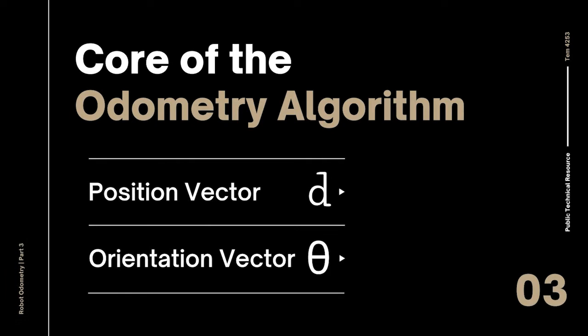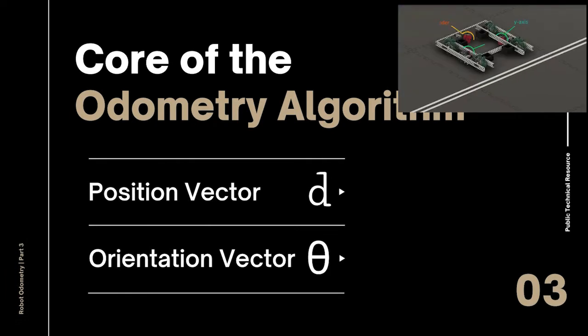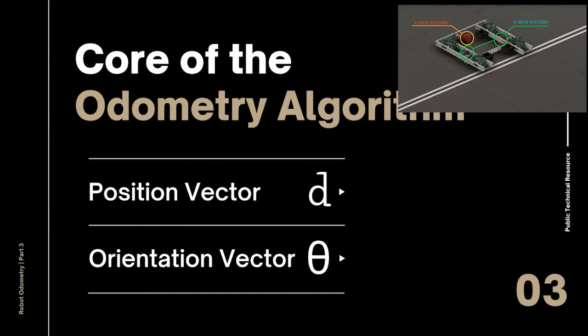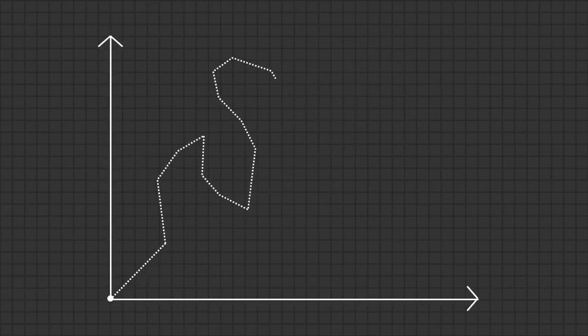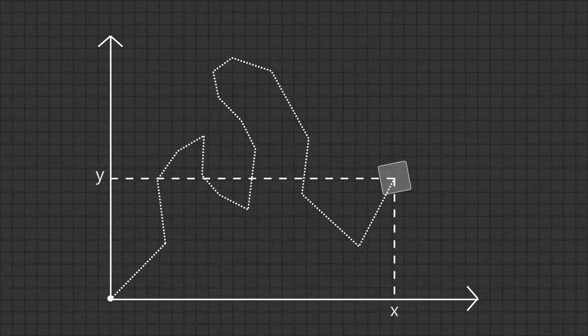As a quick recap, the purpose of the odometry tracking algorithm is to use our tracking wheels to provide the robot with live data on two vectors, the position vector D and orientation vector theta. This video will be focusing on calculating the position vector, which is the vector that represents exactly where the robot is relative to the field.